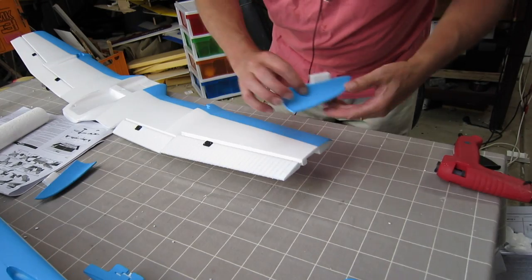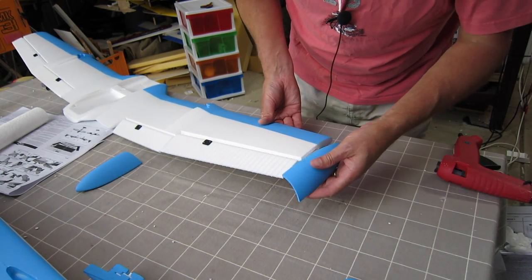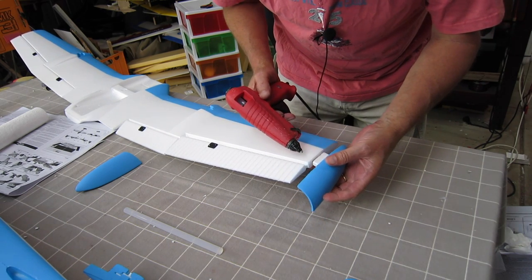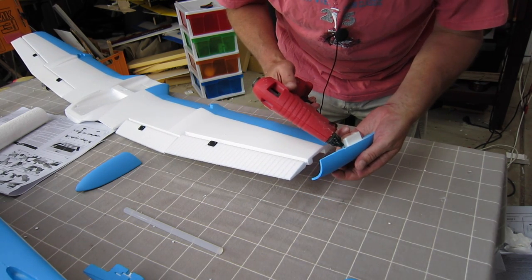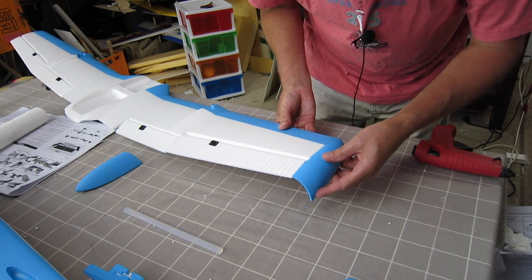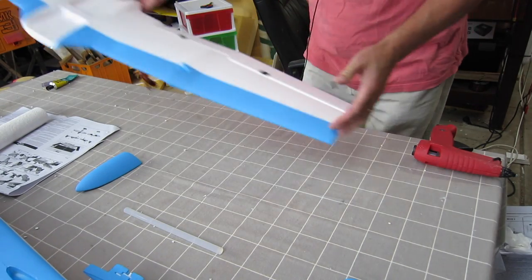Now we can glue the turn-down ends on, just using hot glue. We don't need to glue it to the aileron, so it's only just going to be that little bit there. Sweet, and the other end.